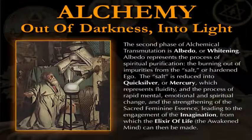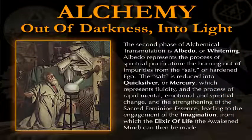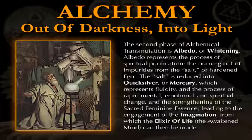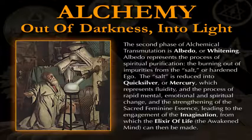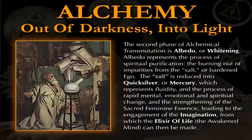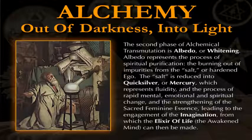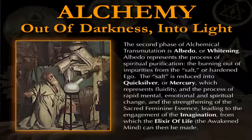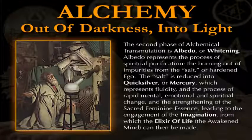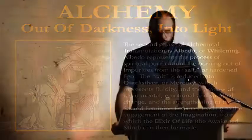The second phase of alchemical transformation is albedo, which means whitening. Albedo represents the process of spiritual purification, the burning out of impurities from the salt or hardened ego. The salt in this step is reduced into quicksilver or mercury, which represents fluidity and the process of rapid mental, emotional, and spiritual change, and the strengthening of the sacred feminine essence, leading to the engagement of the imagination. The only substance, the only essence from which the elixir of life or the awakened or enlightened mind can then be made.